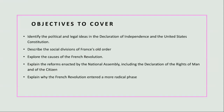The U.S. Constitution, on the other hand, lays out the structure of the American government and its guiding principles. It establishes a federal system separating powers between the executive, legislative, and judicial branches to prevent any one branch from becoming too powerful. Additionally, it includes the Bill of Rights, which enumerates individual freedoms, emphasizing the protection of these rights in a democratic society.